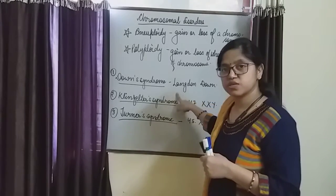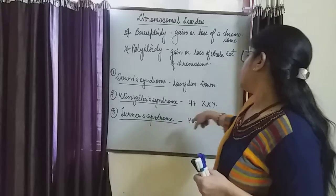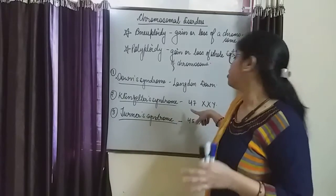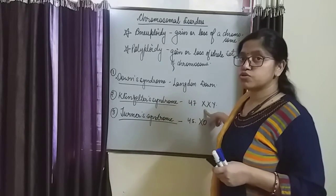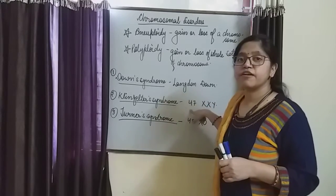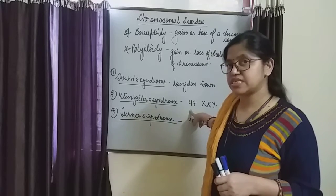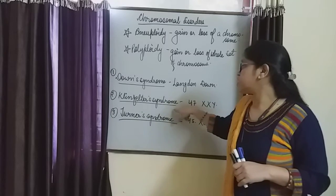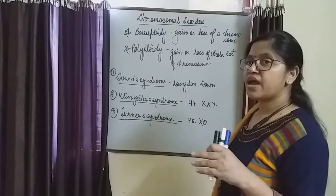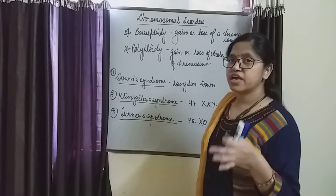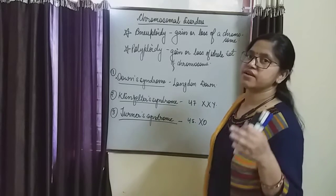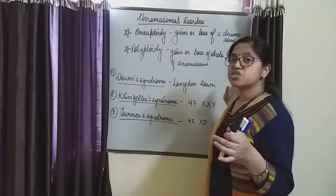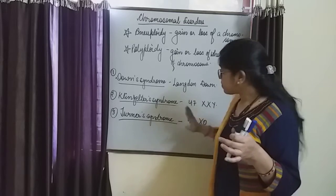In Klinefelter syndrome, an extra X chromosome is added, forming chromosome number 47 instead of the normal 46. Whenever any extra X chromosome is added, that condition is said to be Klinefelter syndrome. In Klinefelter syndrome, the male shows feminism characters and also shows a sterile condition, not a fertile condition.